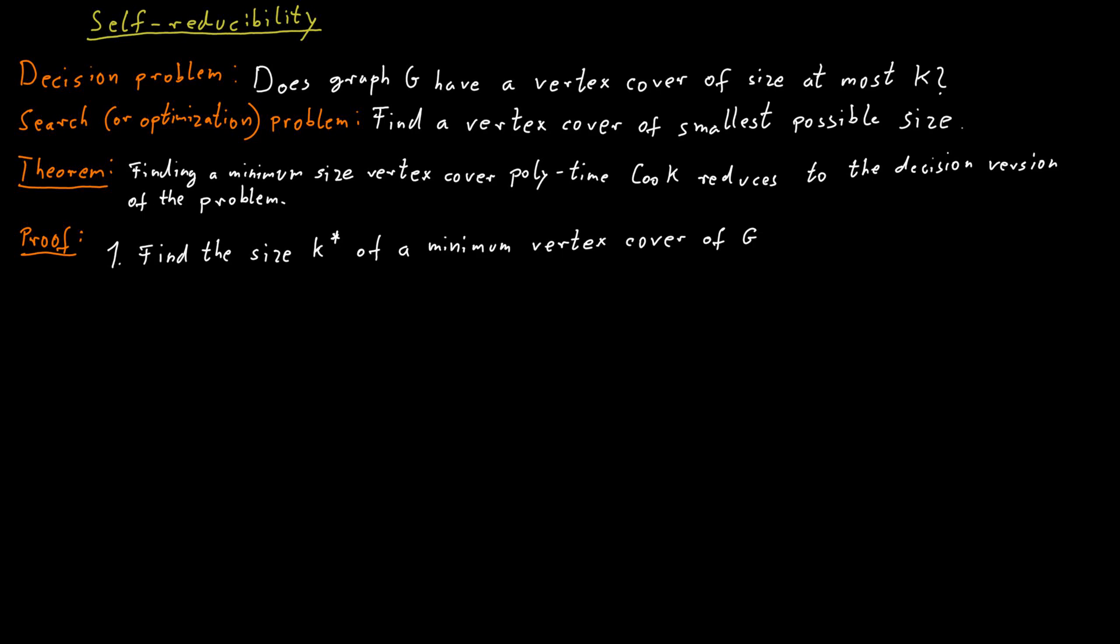For this, we just try all different values for k. So we just ask, is there a vertex cover of size 0? If the answer is no, we just ask, is there one of size 1? If the answer is no, we ask, is there one of size 2 then? And we keep going up until the answer is yes. So then we know what the minimum size of a vertex cover is.